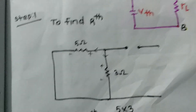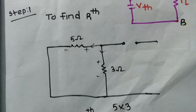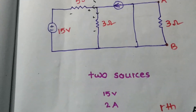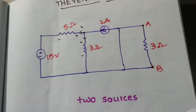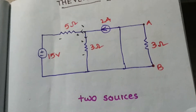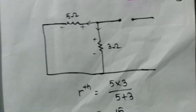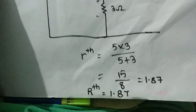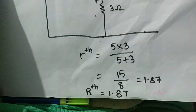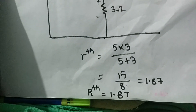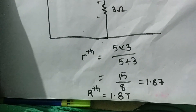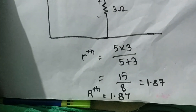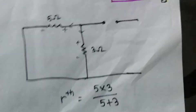Using Thevenin's theorem, the Rth value is found with 5 ohms and 3 ohms, along with 15 volts and 2 amps sources eliminated. The two resistors in parallel give us 5 into 3 divided by 5 plus 3, which is 15 by 8, and that value is 1.87. So Rth equals 1.87 ohms.